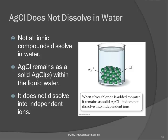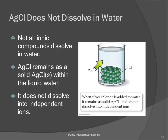Not all ionic compounds dissolve in water. Silver chloride is one that does not. If you put silver chloride into water, it just sits at the bottom and does nothing — the silver ions and chloride ions are too strongly attracted to each other to dissolve in the water. There is a good explanation behind that, but those compounds simply do not dissolve.